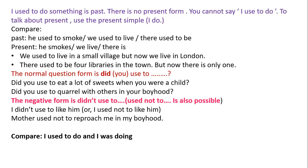'Did you used to quarrel with others in your boyhood?' The negative form is 'didn't use to' or 'used not to' — both are correct. For example: 'I didn't use to like him' or 'I used not to like him.' 'Mother used not to reproach me in my boyhood.'